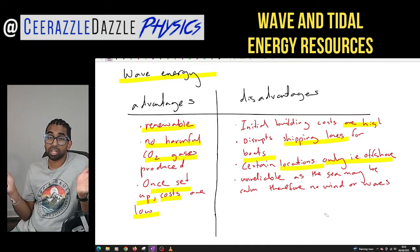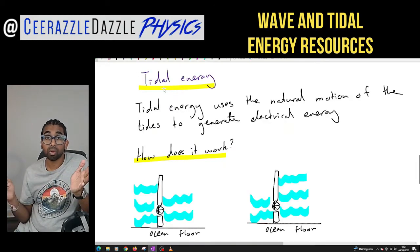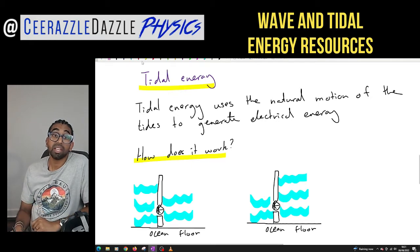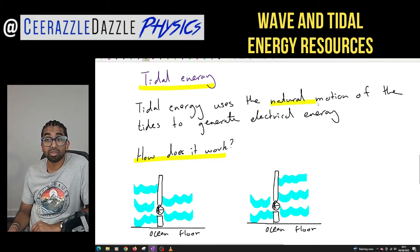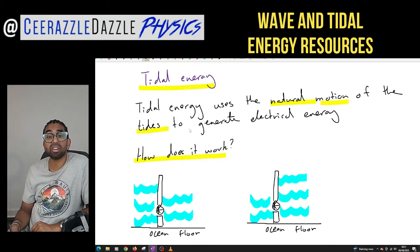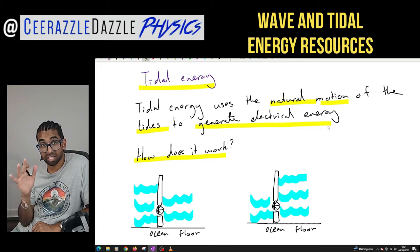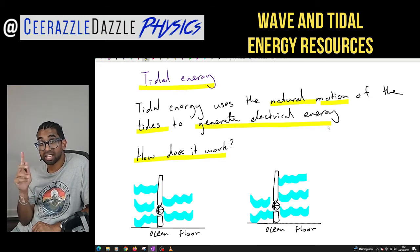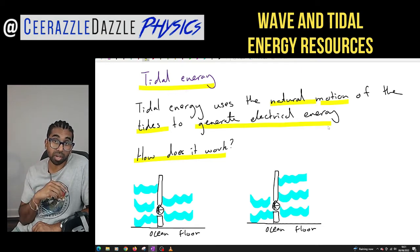Let's move on to tidal energy. Tidal energy is different to wave energy — it uses the natural motion of the tides coming in and out to generate electrical energy. Make sure you note the difference between wave energy and tidal energy.